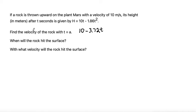This is the derivative of our height function, which represents the velocity of the rock. If we're trying to find the velocity of the rock when t is equal to a, we just take a and substitute that for our t. So plugging in a for t, we get 10 minus 3.72a. That would be the expression for the velocity of the rock when t is equal to a.